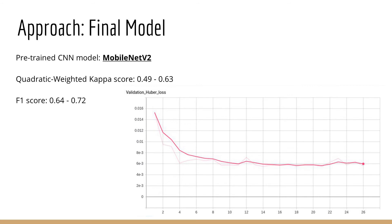This is a loss function graph of our best model. Our best model employs pre-trained MobileNet V2, connected to four fully connected layers, eight image augmentation techniques, and no image engineering. Indeed, we managed to improve our quadratic weighted kappa score from 0.49 to 0.63, and the F1 score has also increased from 0.64 to 0.72.